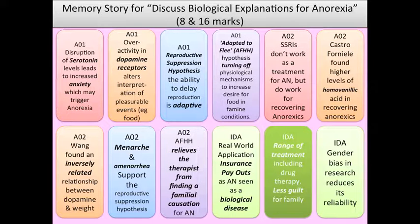The insurance company not only gives a payout but also provides antidepressants to help the girls recover. They take them, feel better, and the parents are glad and don't feel guilty. This represents that biological explanations attribute anorexia to biological dysfunction — not a dysfunctional family — so the family feel less guilty. It also highlights that a range of treatments is available, including drug therapies.